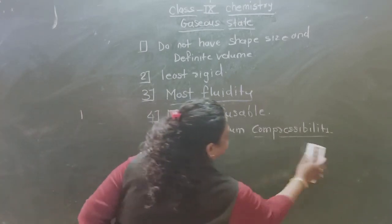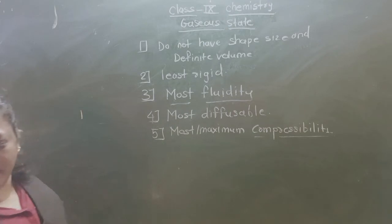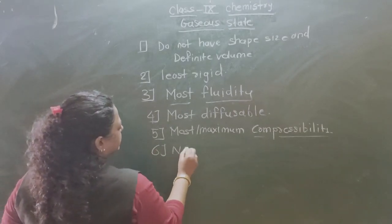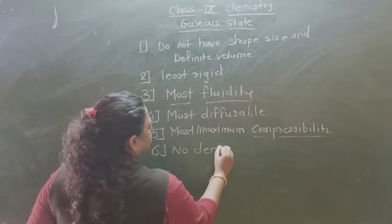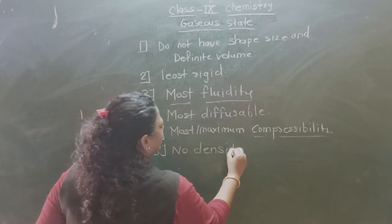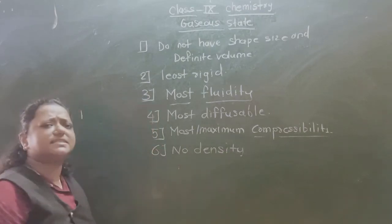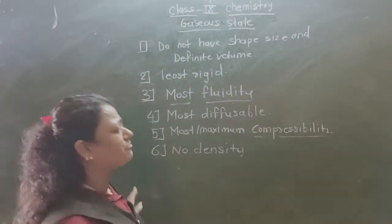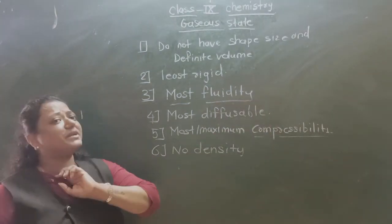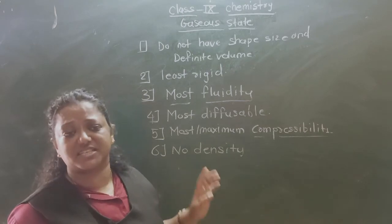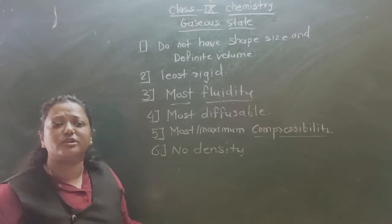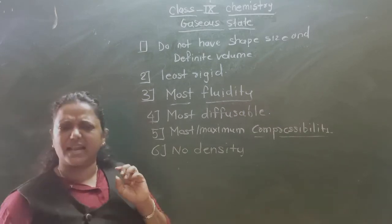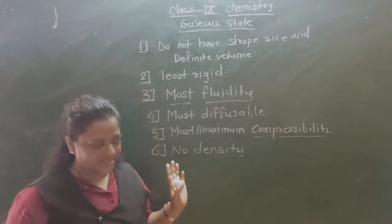The sixth property is no density, or very low density. Why is there no density? Because the particles are farthest apart from each other. Since there is essentially no definite volume, there is no density for the gaseous state. These are less dense compared to solids and liquids.